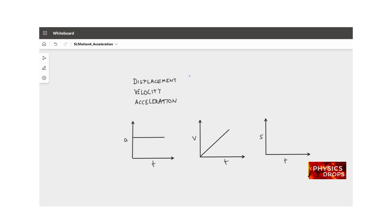What is displacement? Let's say I have a point A and a point B. An object travels from point A to point B — it can take this route or that path. What we are concerned about in displacement is the net change in position. The object has changed its position from A to B. Displacement can be 5 meters in a particular direction, because displacement is a vector quantity. 5 meters this way is different from 5 meters in another direction — direction matters.